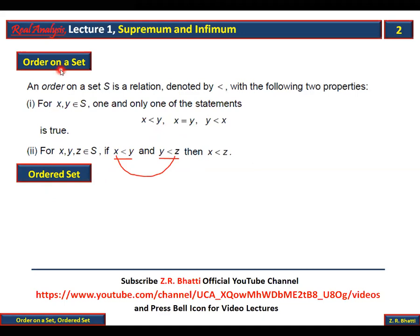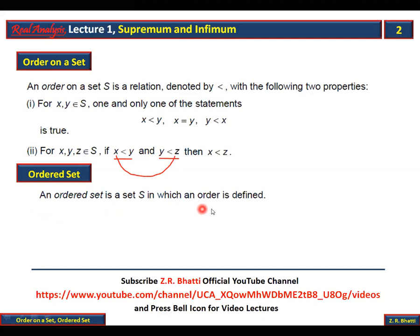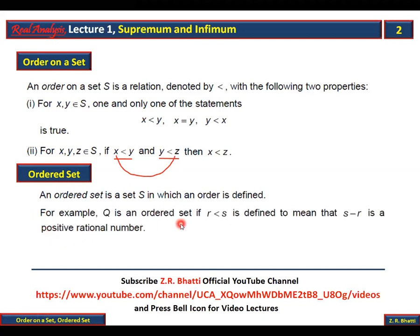Ab 'ordered set' kya hoga? Jab kisi set ke upar koi order define kiya ja chuka ho, to use 'ordered set' kehte hain. An ordered set is a set S in which an order is defined. For example, Q is an ordered set if r less than s is defined to mean that s minus r is a positive rational number.